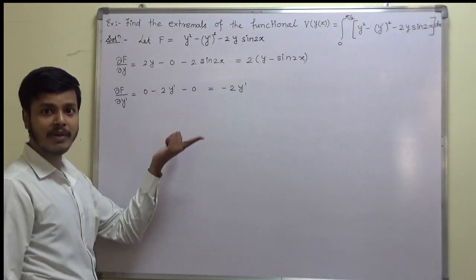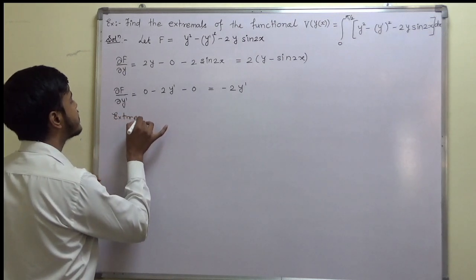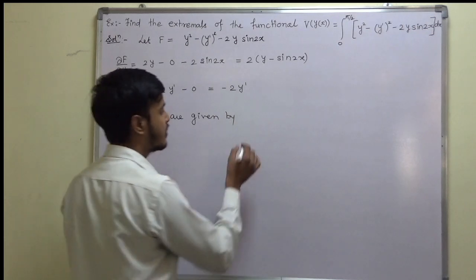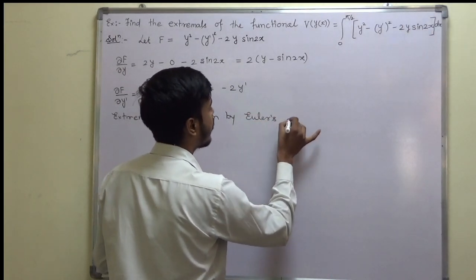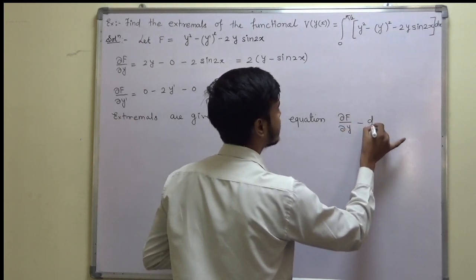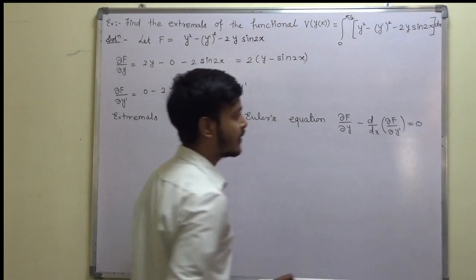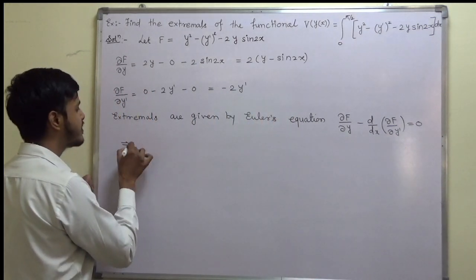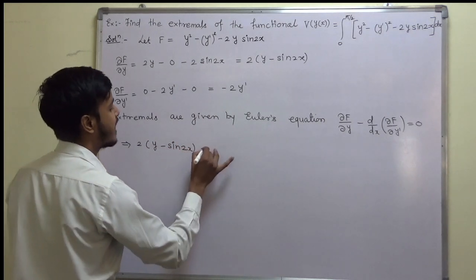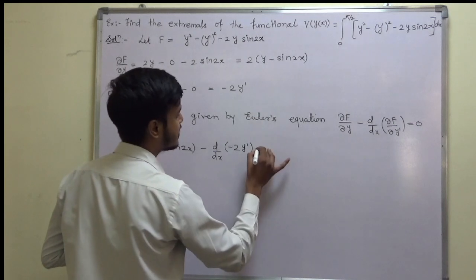Now, the extremals are given by Euler's equation: ∂f/∂y − (d/dx)(∂f/∂y') = 0. Substituting our values: (2y − 2 sin 2x) − (d/dx)(−2y') = 0. Dividing throughout by 2, we get: (y − sin 2x) − d/dx(−y') = 0, which simplifies to y − sin 2x + y'' = 0.